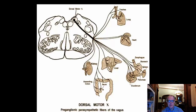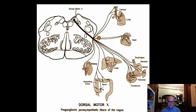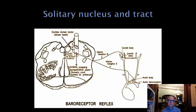The dorsal motor nucleus of the vagus has important effects on the heart and GI tract, but of course also plays an important role for the lung, liver, and kidney as well.